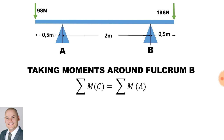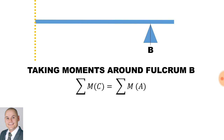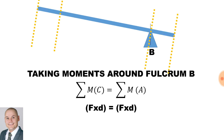Now we are going to take the moments around Fulcrum B. Once again, the sum of moments clockwise must be equal to the sum of moments anticlockwise. There are four areas on the beam where there are forces, including upward forces and downward forces. We are taking the moments around Fulcrum B, so to calculate the moments it will be force multiplied by distance. Therefore, we are pushing up at point A.